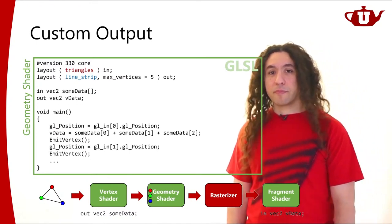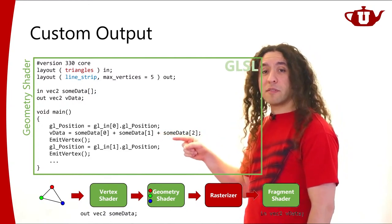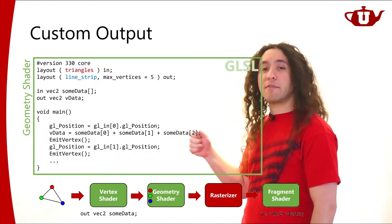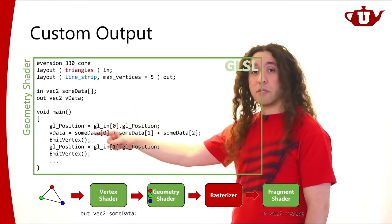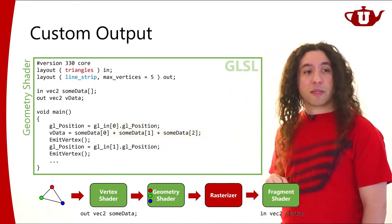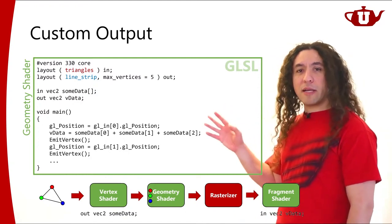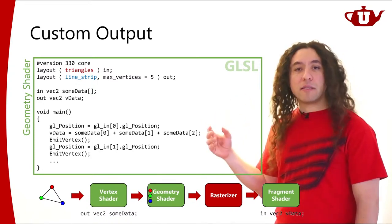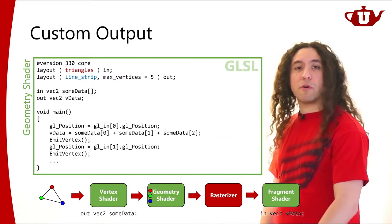Another thing to note: I set output variables and then emit a vertex. I don't have to set them from scratch every time. If I emit another vertex without modifying vData, the same vData value will be sent as part of the second vertex. So I don't have to specify it every time.